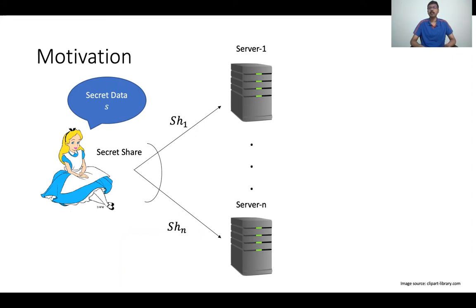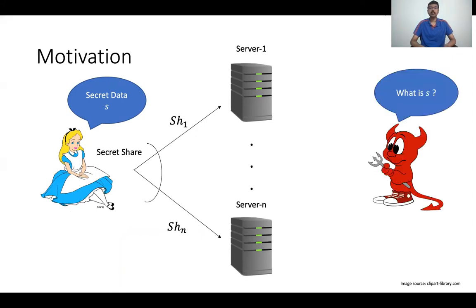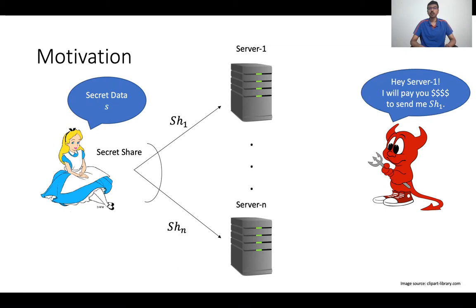However, there is an adversary who is interested in learning about Alice's secret data. In fact, the adversary is willing to pay the servers in order to learn this information. So the adversary approaches one of the servers and promises to pay a certain amount if the server sends the share it received from Alice to this adversary.